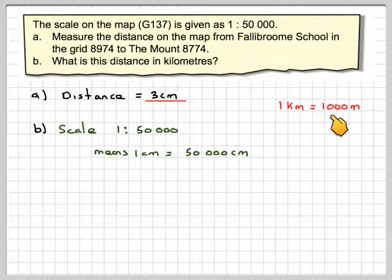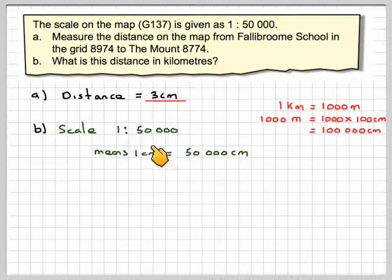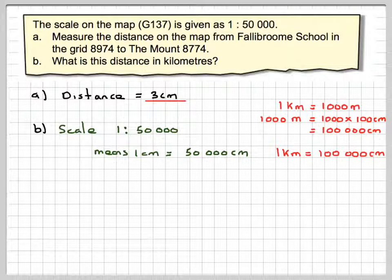1 kilometer is 1,000 meters, and 1,000 meters is 1,000 times 100 centimeters because every meter is 100 centimeters, which means 100,000 centimeters. But I've got a map scale of 1 centimeter that is 50,000 centimeters. Now this divided by this makes a scale of 1 centimeter being 0.5. So 50,000 divided by 100,000 is 0.5 kilometers.